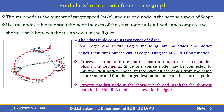The end node is the second input port of the scope. Use the scope nodes table to obtain the node indexes of the start node and end node, and compute the shortest path between them as shown in the figure. From the workspace, you can also obtain the nodes table and find the shortest path between these two nodes.